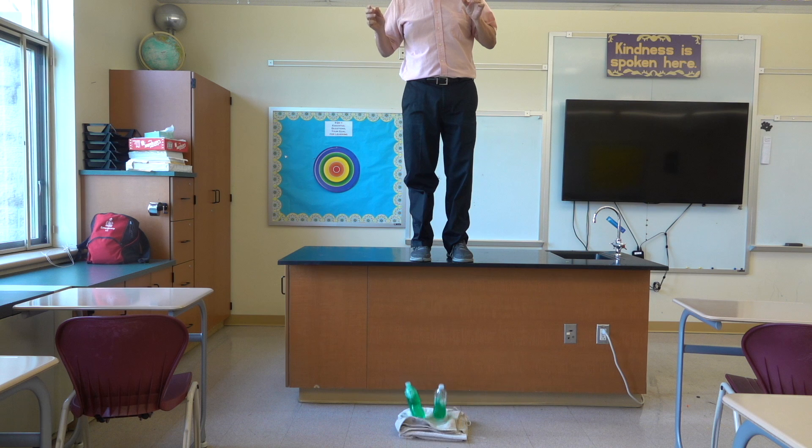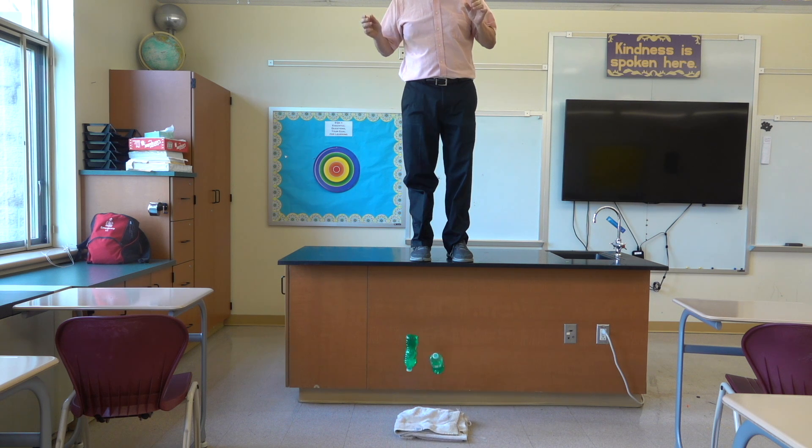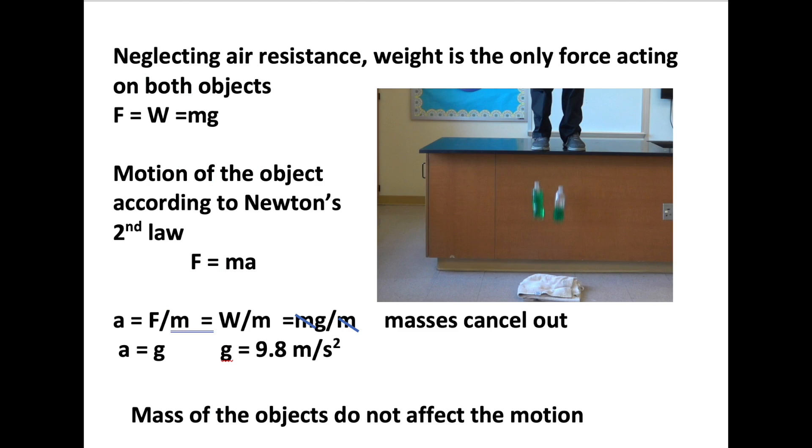The reason that the lighter object and heavier object can fall at the same rate can be explained by Newton's second law. It tells us if we divide the force of Earth's gravity on an object by its mass, we'll always come up with the same acceleration, 9.8 meters per second squared. So with no air resistance, the mass of the object doesn't make a difference.